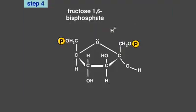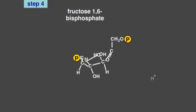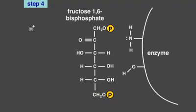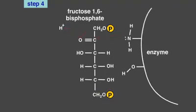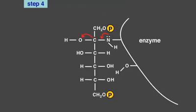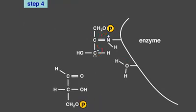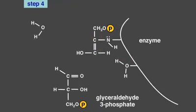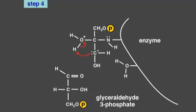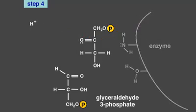Step four of glycolysis begins with the opening of the ring form of fructose-1,6-bisphosphate into its open chain form. In this step, the enzyme aldolase cleaves fructose-1,6-bisphosphate into two molecules. One molecule that is formed is the 3-carbon glyceraldehyde-3-phosphate. The enzyme performs additional reactions on the second 3-carbon molecule, dihydroxyacetone phosphate.